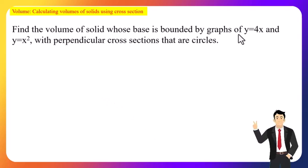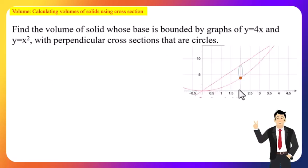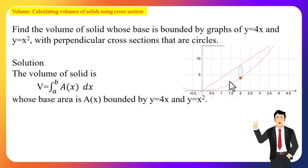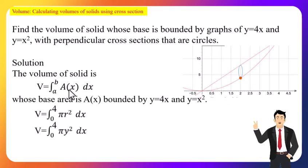One more example: find the volume of a solid whose base is bounded by y = 4x and y = x², with perpendicular cross-sections that are circles. Here y = 4x is a straight line and y = x² is a parabola. The two curves intersect at x = 0 and x = 4, so the range of integration is 0 to 4.